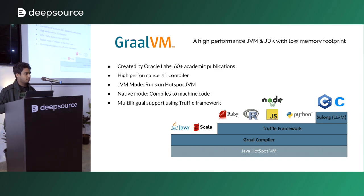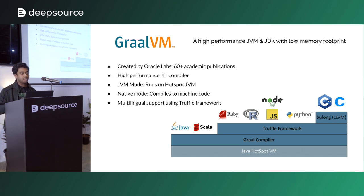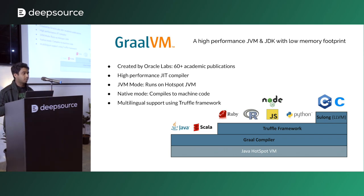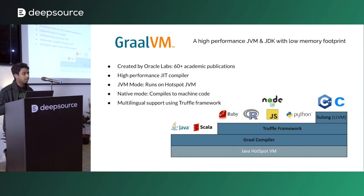GraalVM is a Java VM created by Oracle Labs. It's high performance, has a low memory footprint, and runs its own optimizations — with 60-plus academic publications focused on improving performance and memory usage. It has two modes: JVM mode, where it runs on top of your HotSpot VM, and native mode, where it compiles your code ahead of time down to native machine code. So you're not running Java bytecode — you're running actual CPU instructions, which means faster startup, less memory, and super high performance.